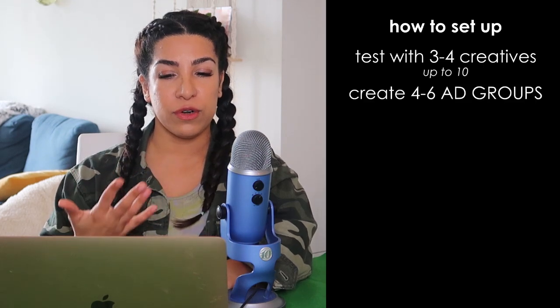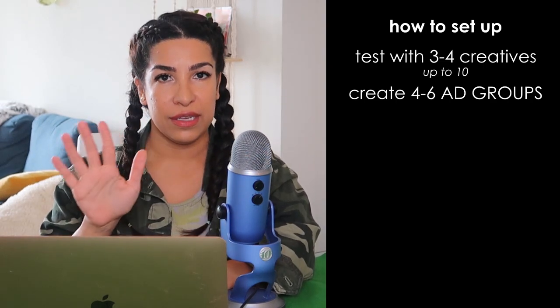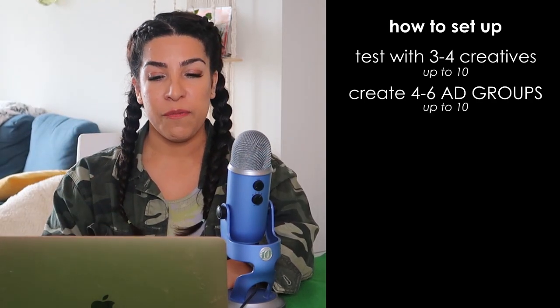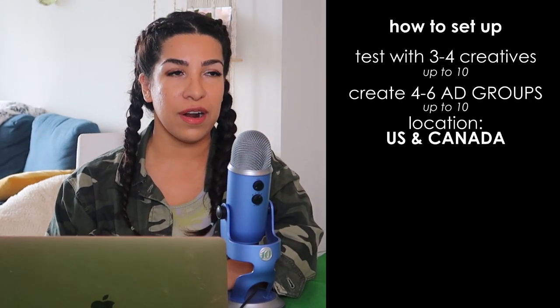I like to create four to six ad groups. I personally do a minimum of six, but if you're just getting started, start with four. Sometimes I do 10 and play around with the bid amount and location. I do US and Canada. Sometimes I test these separately — I noticed some products actually sell much better in Canada and some do much better in the US, and the data is completely different. That doesn't guarantee a winning product, but it helps bring down your CPA.